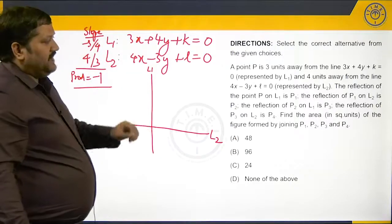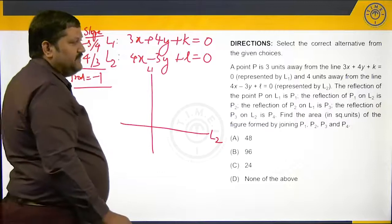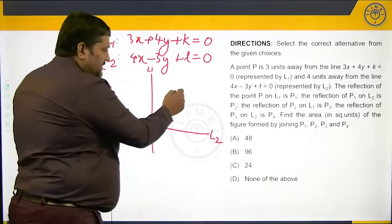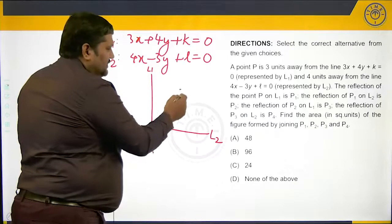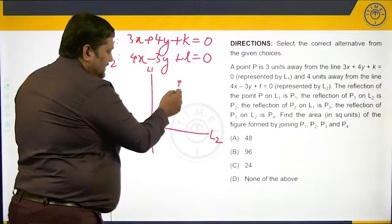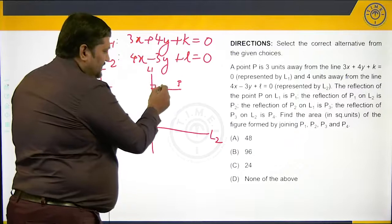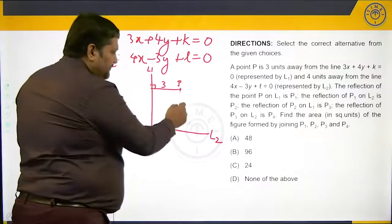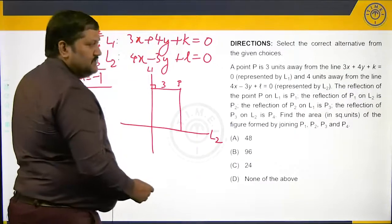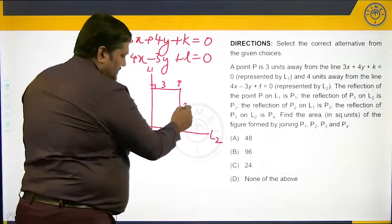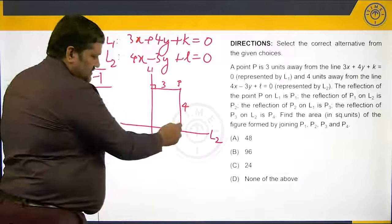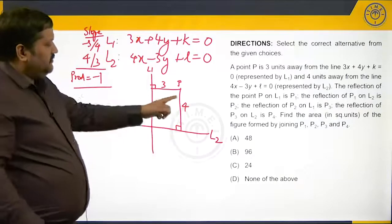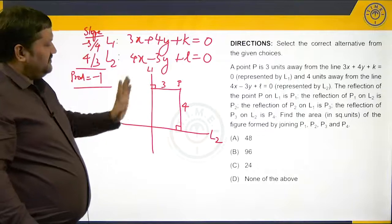It is given that point P is 3 units away from line 1. So let us say this is point P. It is 3 units away from line 1 and 4 units away from line 2. The distance of point P from line 2 is 4, and the distance from line 1 is 3.